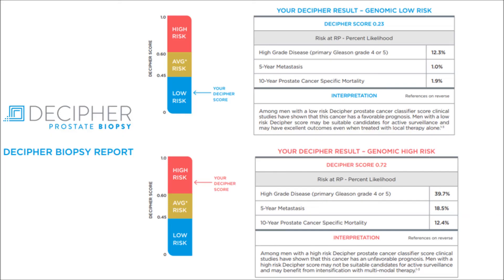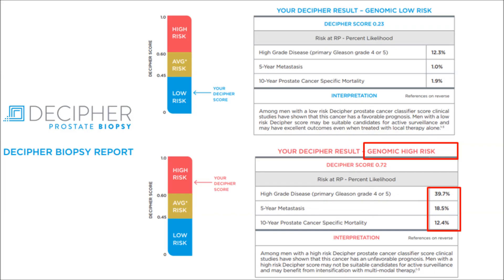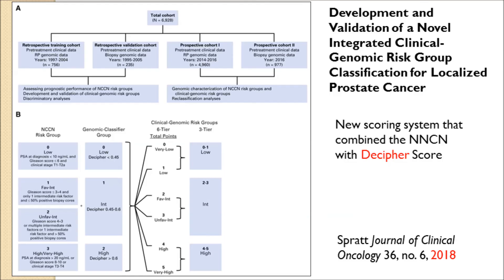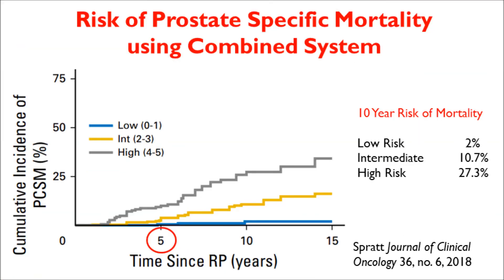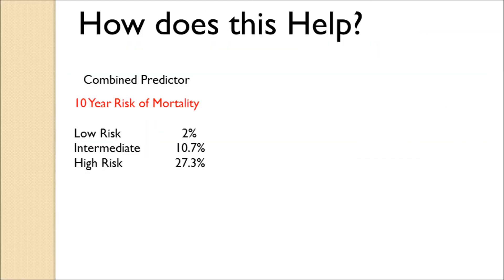Further Decipher studies show that a low risk score predicts low risk of high Gleason cancer, very low risk of metastases, and a low 10-year risk of dying — about 1.9%. On the other hand, a high Decipher risk score can push the 10-year risk of dying of prostate cancer up to 12%. Studies published in 2018 combine the genomic Decipher score with traditional scoring systems such as stage and Gleason to place patients into low, intermediate, or high risk categories, giving a simpler prediction of mortality.